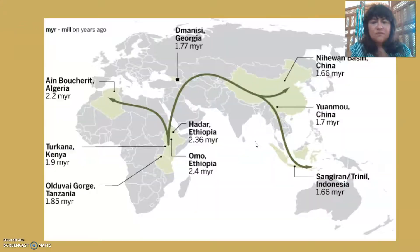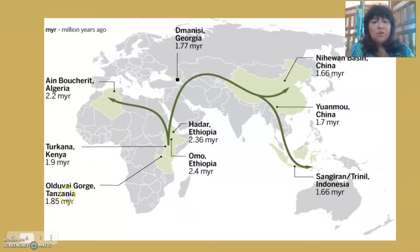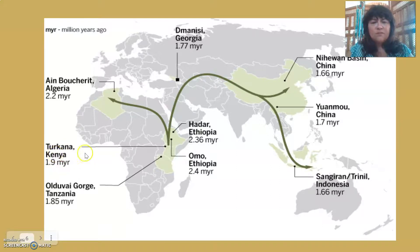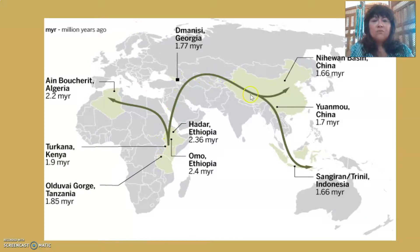Looking at ergasters in Africa, we see a range of about 2.4 to 1.7 million years ago — the Nariokotome Boy is about 1.7 million. We estimate that around 2 million years ago, the first ergaster begins to move out of Africa and into other parts of Eurasia.